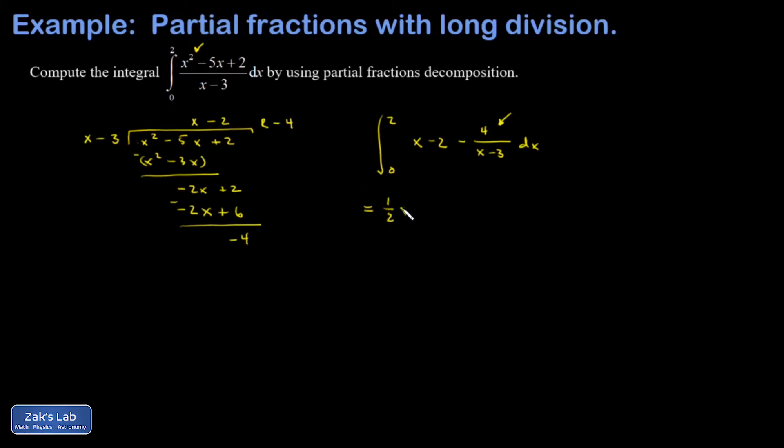So I get 1 half x squared minus 2x minus 4 natural log absolute value x minus 3. This is all evaluated from 0 to 2.